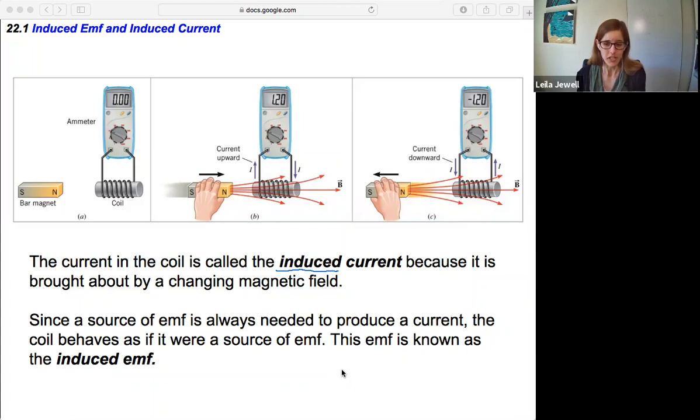Since a source of emf is always needed to produce a current, the coil then behaves as though it's an emf source. This emf is known as the induced emf—the changing magnetic field has made it appear as though there's a battery there, but it's not a real battery, so that's why we call it induced as opposed to just standard emf.